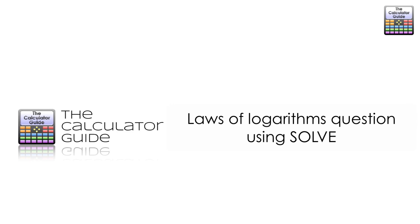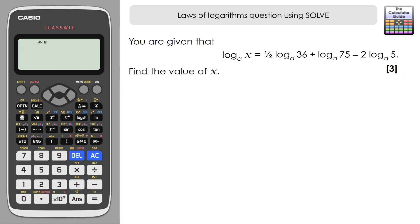Hello and welcome to the calculator guide video on laws of logarithms question using SOLVE. We're going to use the ClassWiz SOLVE feature to help support us with our solution to this question. You are given that log base a of x equals 1/2 log 36 plus log 75 minus 2 log 5, and we have to find the value of x.